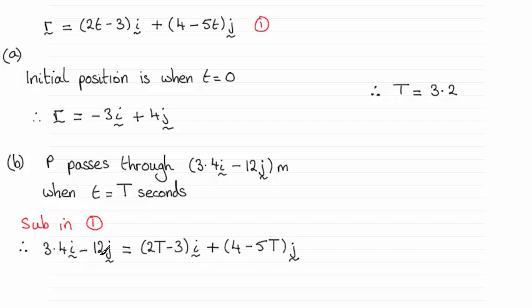So if you do that, then substitute your values into equation 1. You've got R is 3.4i minus 12j. And then we've got 2t minus 3i plus 4 minus 5tj. And what you can do is either compare the i components or the j components. Both should lead you to this result.